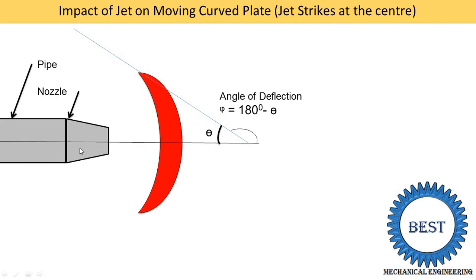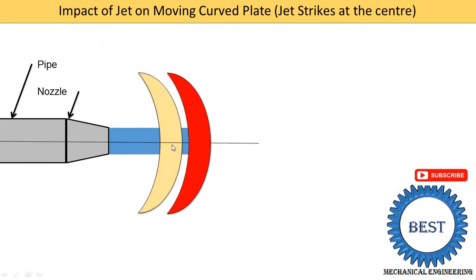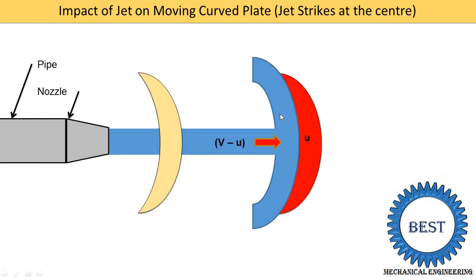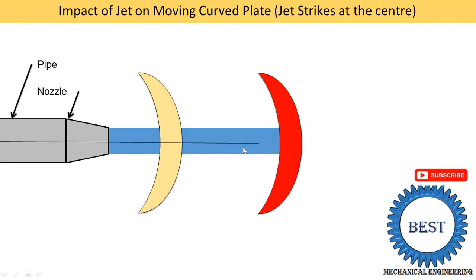The water jet comes out with velocity v from the nozzle. The water jet strikes the plate and the plate starts to move with velocity u, moving to a new position. The velocity of the jet is v and the velocity of the blade is u. After striking, the jet strikes with what is known as the relative velocity — the velocity of the jet with respect to the plate. Since both the jet and plate are moving in the same direction, the relative velocity is v minus u.